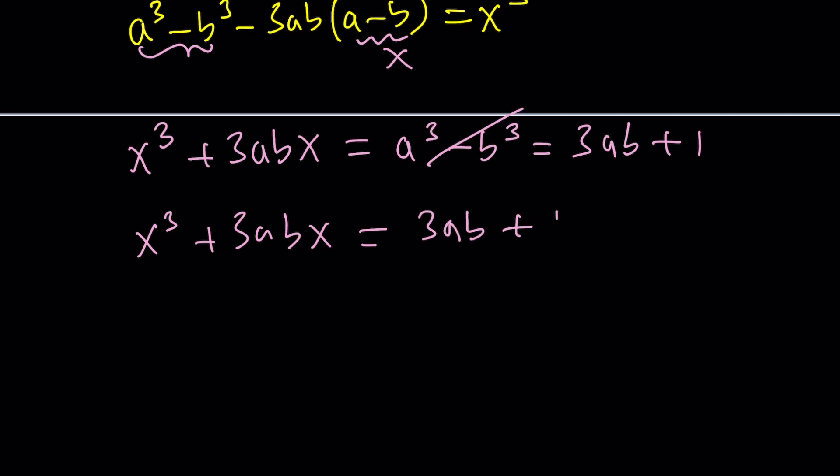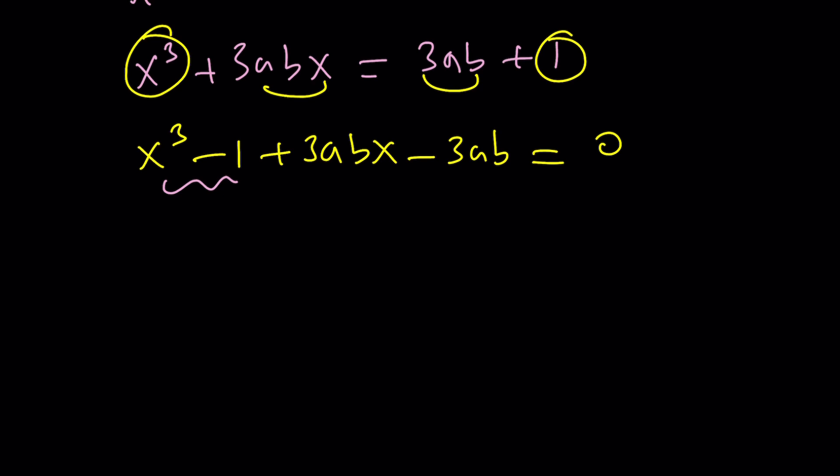Now we can put everything on the same side. Be careful when you do that because I want to pair up these two first and then these two, so that we can take out a common factor and factor the whole thing. So it's equal to 0. For these two terms, this is a difference of two cubes. There's a formula: (x - 1)(x² + x + 1). And then these two, we can factor out 3ab, and that'll be (x - 1).